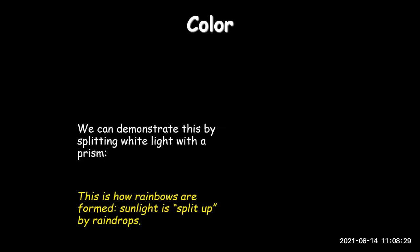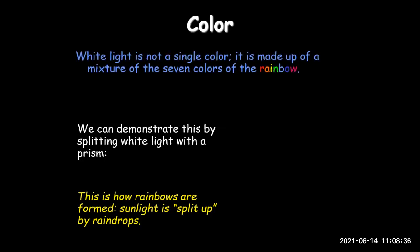We can demonstrate this by splitting light through a prism. White light is not a single color — it is made up of seven colors of the rainbow. When white light is passed through a prism, we see seven colors of light coming out, showing that white light consists of seven colors.